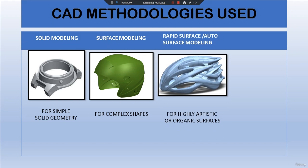The third methodology is rapid surface modeling and auto surface modeling. This is specially used for highly artistic or organic surfaces. Even if we create a complex shape, it is difficult to merge it with another surface. Rapid surfacing reduces our efforts greatly by automatically creating surfaces where needed. Auto surface modeling is similar to rapid surfacing but is used to obtain a closed volume CAD model — it is effortless, but editing it afterwards is a big task.